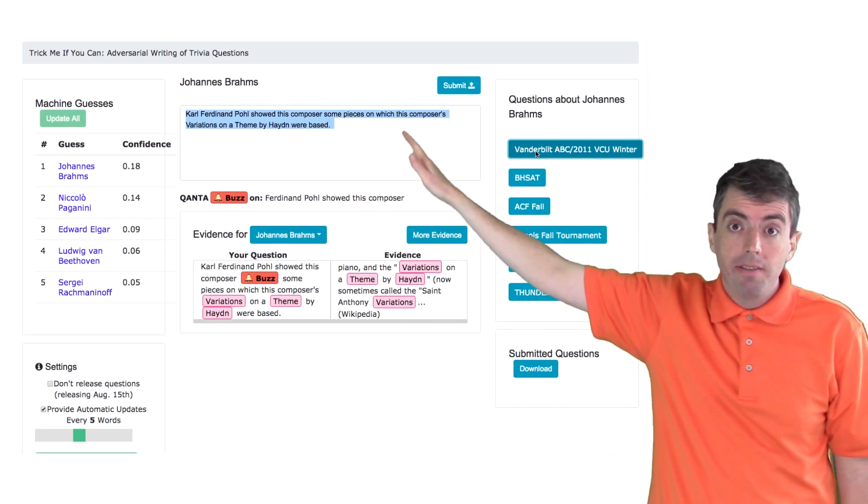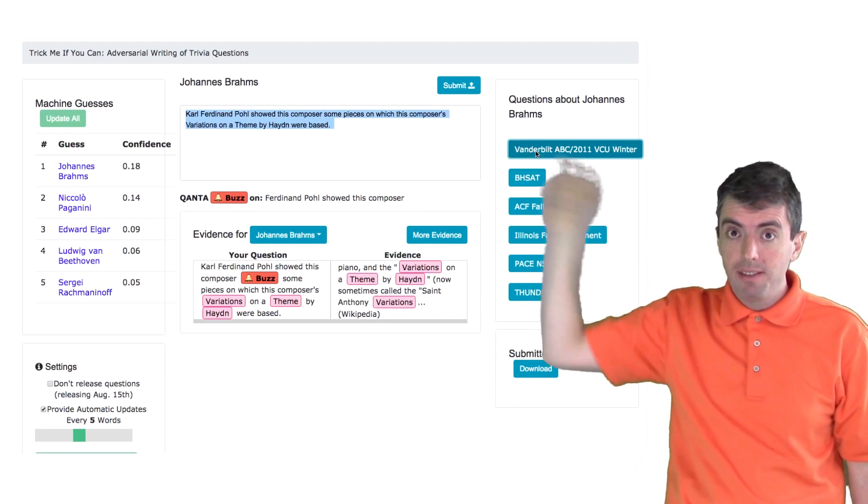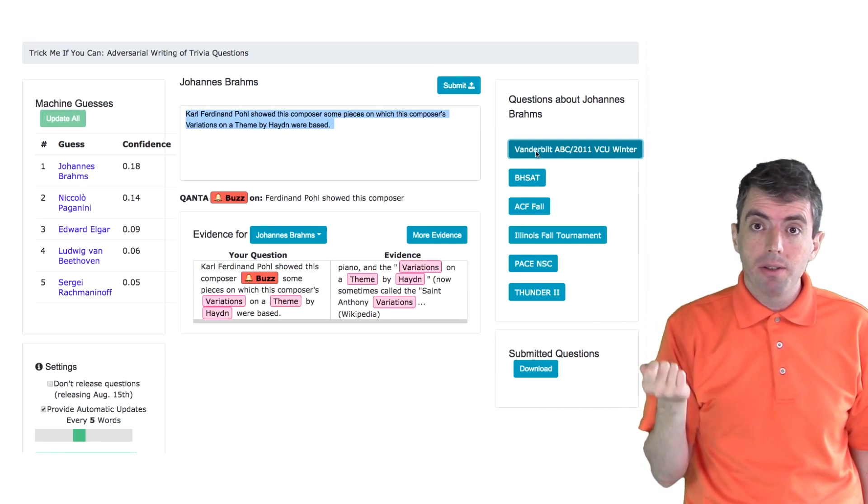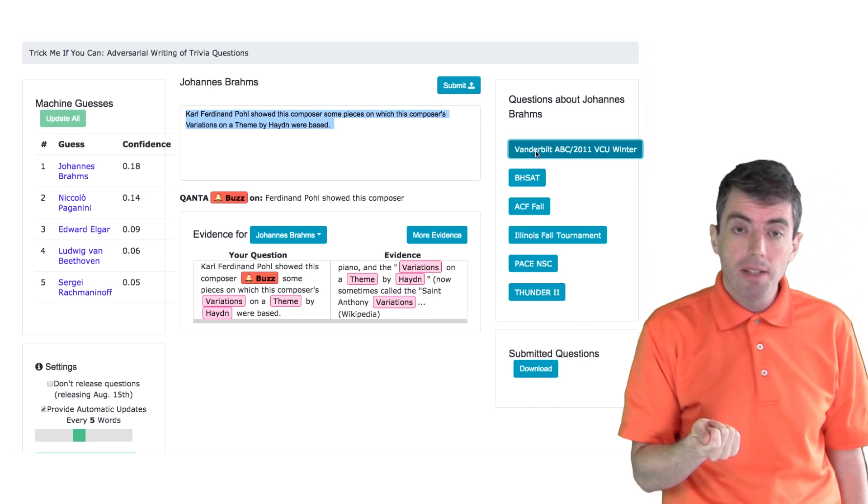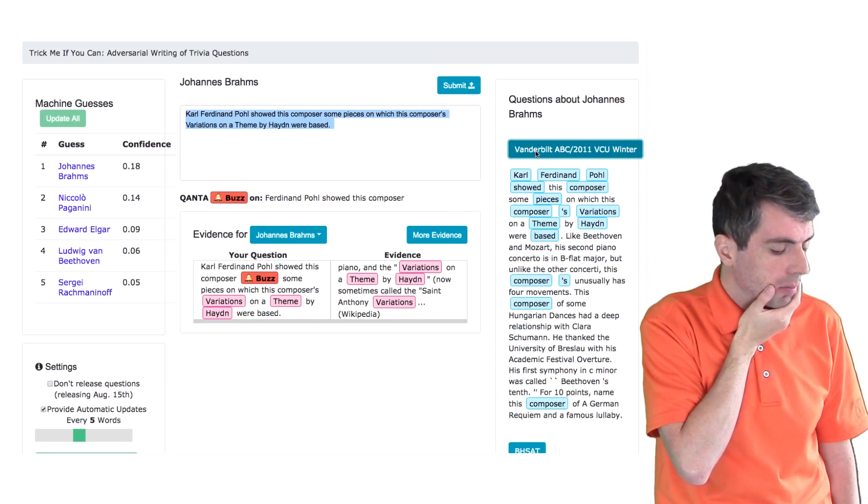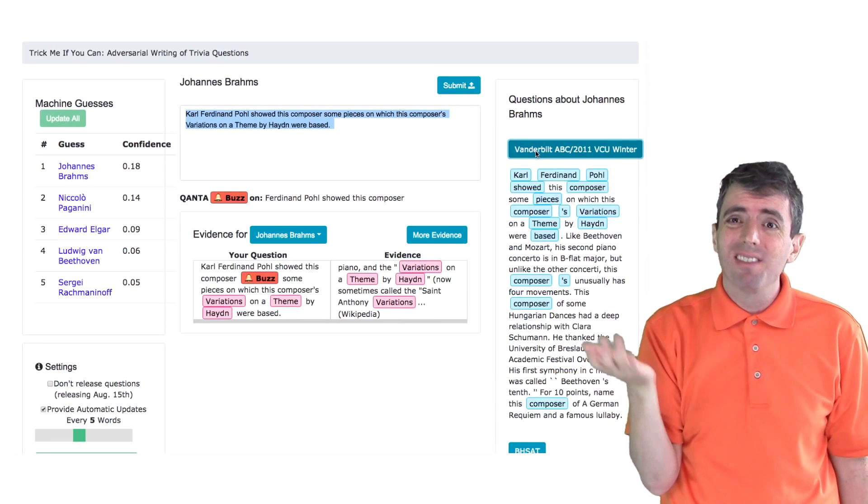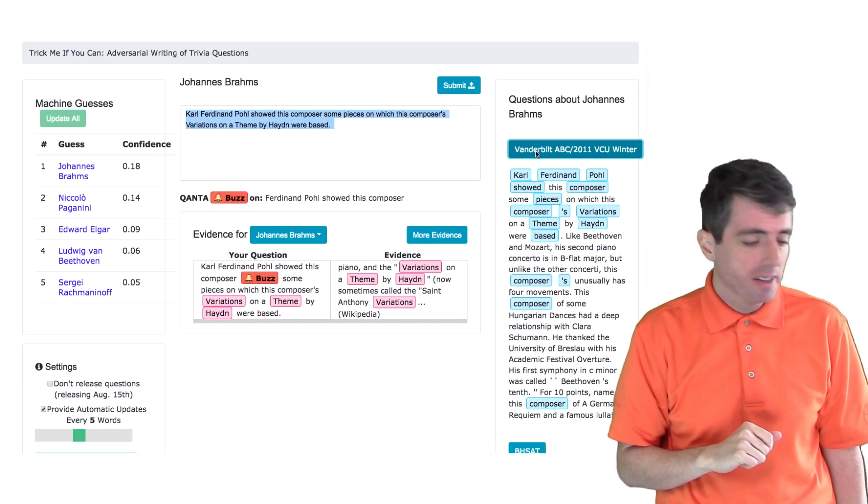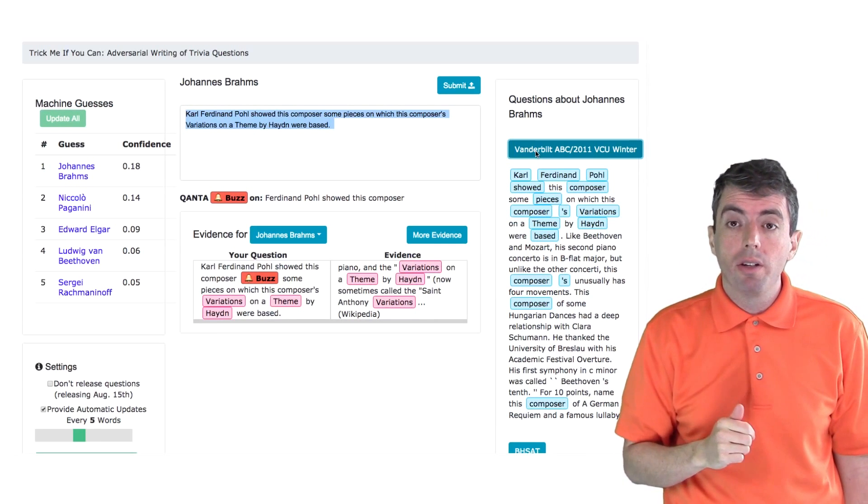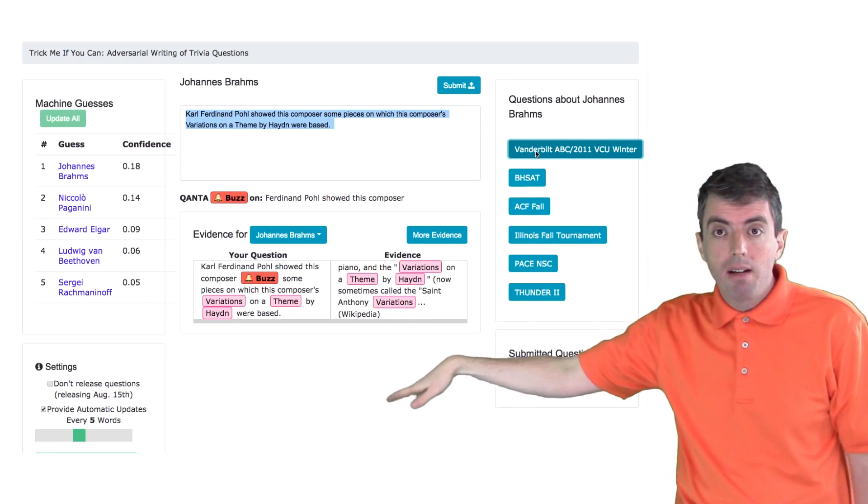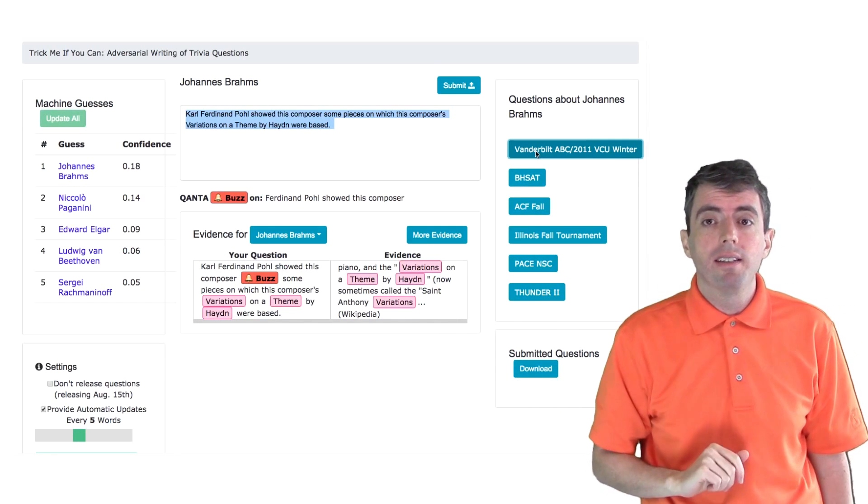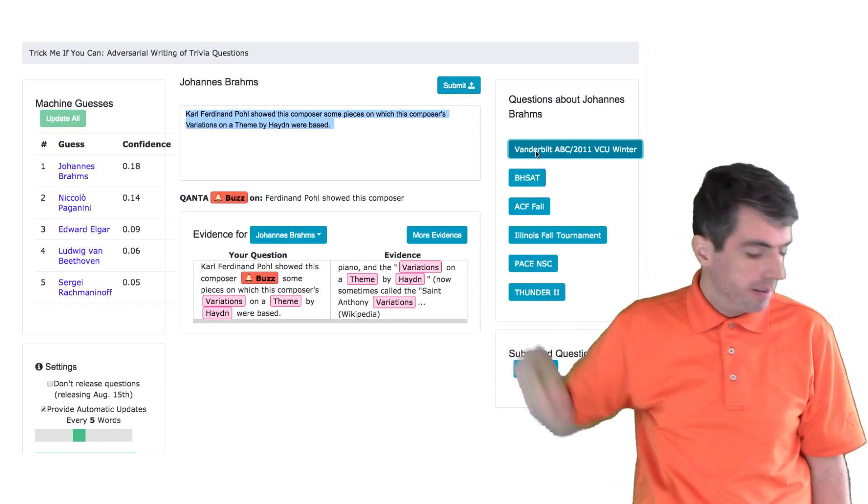In addition to seeing the guesses on the far left-hand side of the screen, where Johannes Brahms is on top, we can also see what other questions have been written about Johannes Brahms. And so here we can click on Vanderbilt ABC. We can click on that and see that, oh, someone else has already used this clue before at the beginning of a question, so maybe this isn't the best way for me to start this question. And these questions will be ordered based on the similarity to the question that you've typed in thus far.